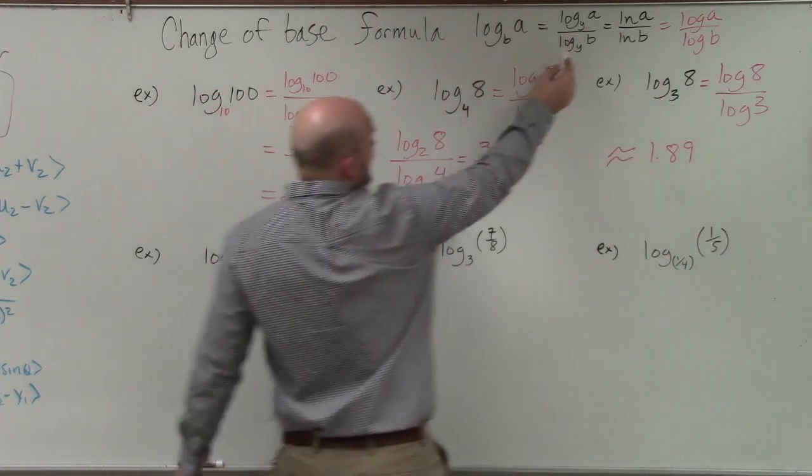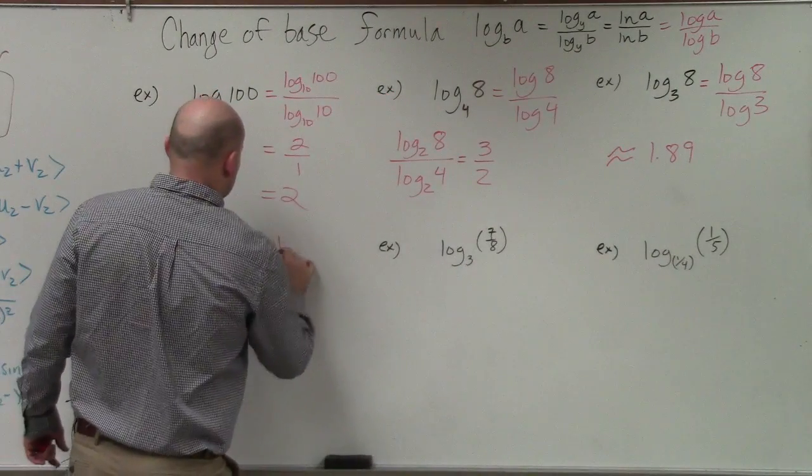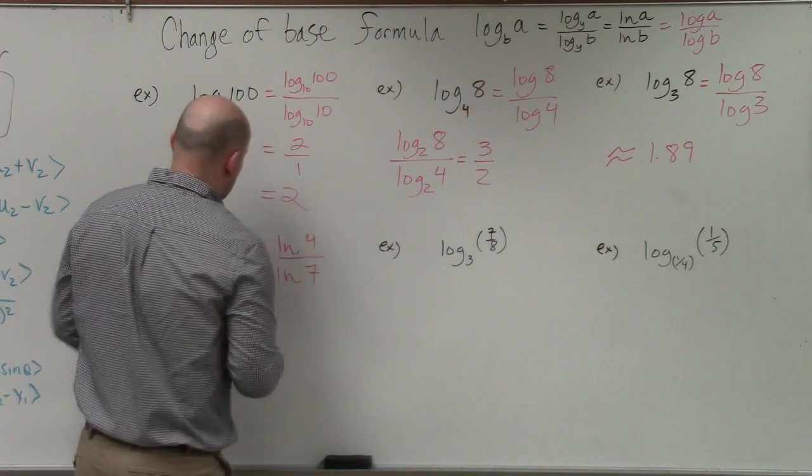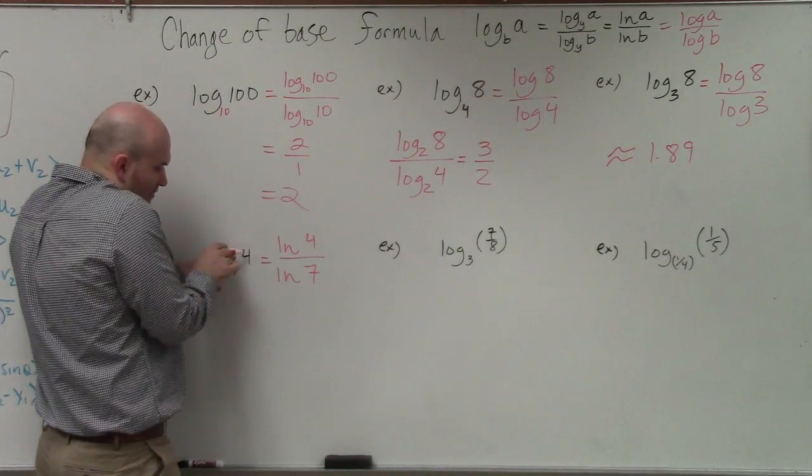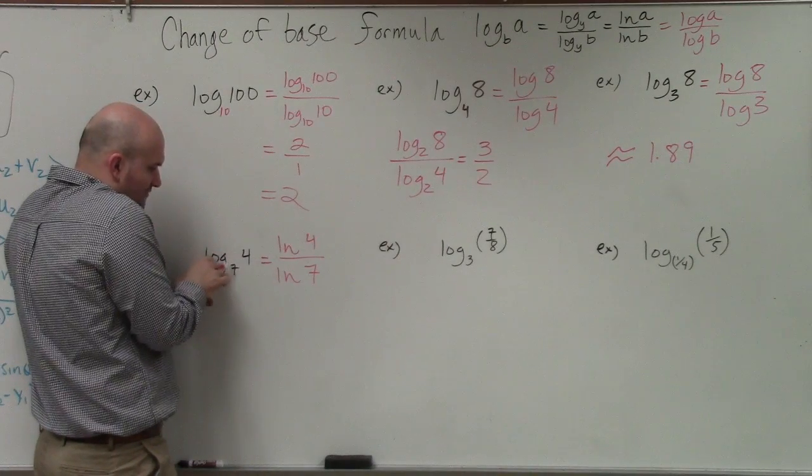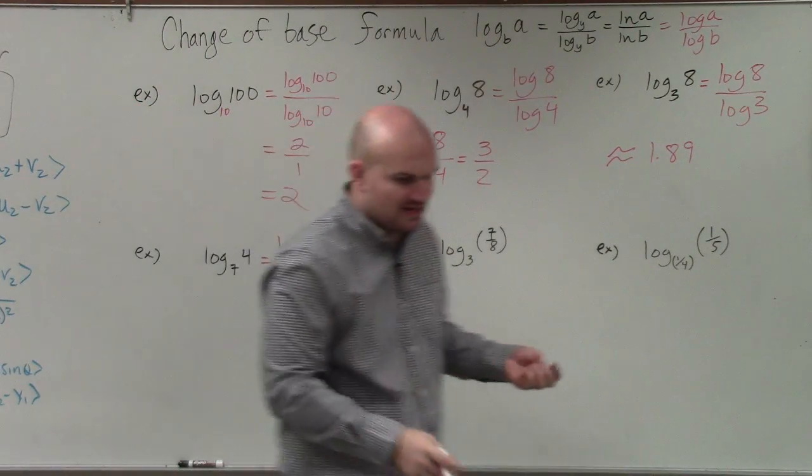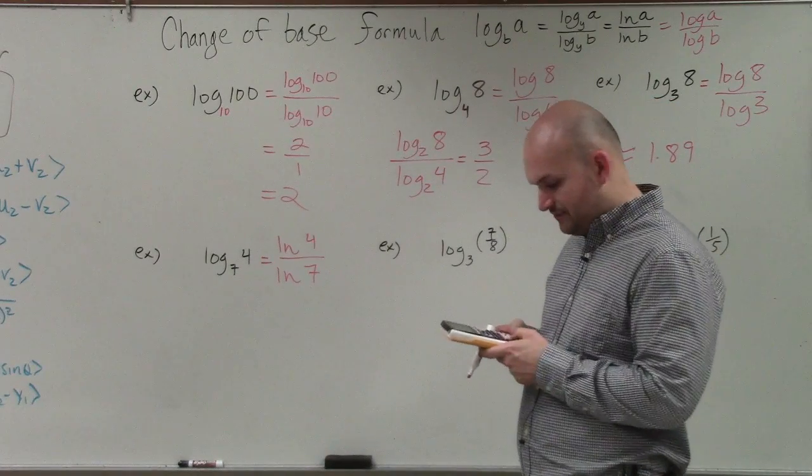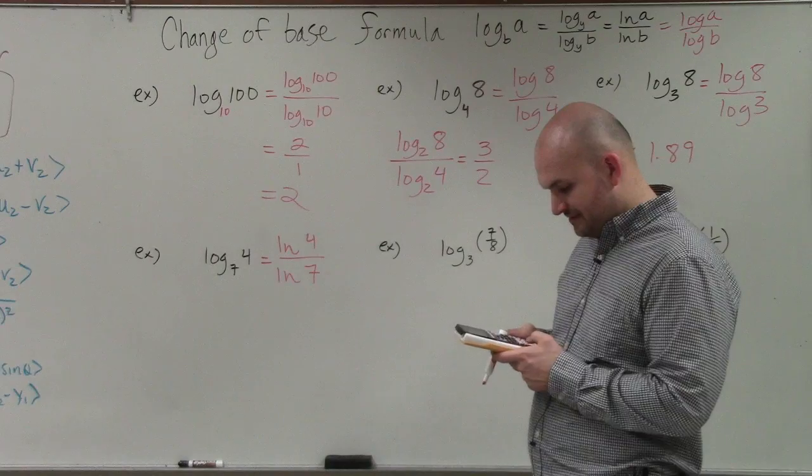But all calculators that are going to have logarithm are also going to have your natural logarithm. So since the base y doesn't matter, I could also do ln of 4 divided by the ln of 7. So basically, you're taking the logarithm of your value and then the logarithm of your base of your logarithm. Use it and change the base formula. So it doesn't matter if I type in log or ln.